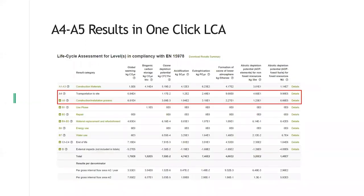A4 and A5 are always shown after A1 to A3 in the results — in this example from Levels, we can see it's right after. A5 can usually also be separated into different groups: materials in A5, construction site emissions related to energy, and waste. If we have filled in all that information, it's also expandable, which I'll show tomorrow throughout the session.